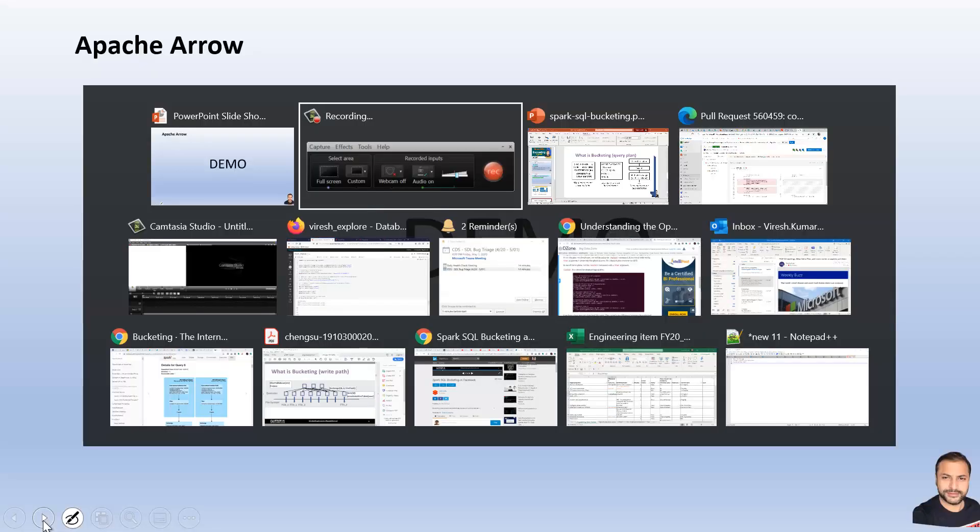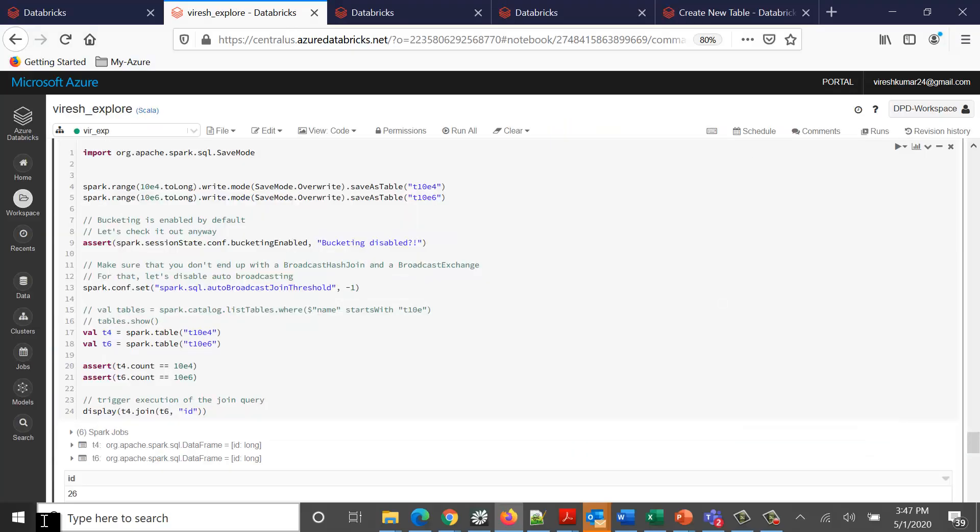Now let's try to understand it from the actual demo. If you see my notebook here, I've tried to create two tables, one with 10k records and another one with 1 million records. By default, bucketing is enabled.